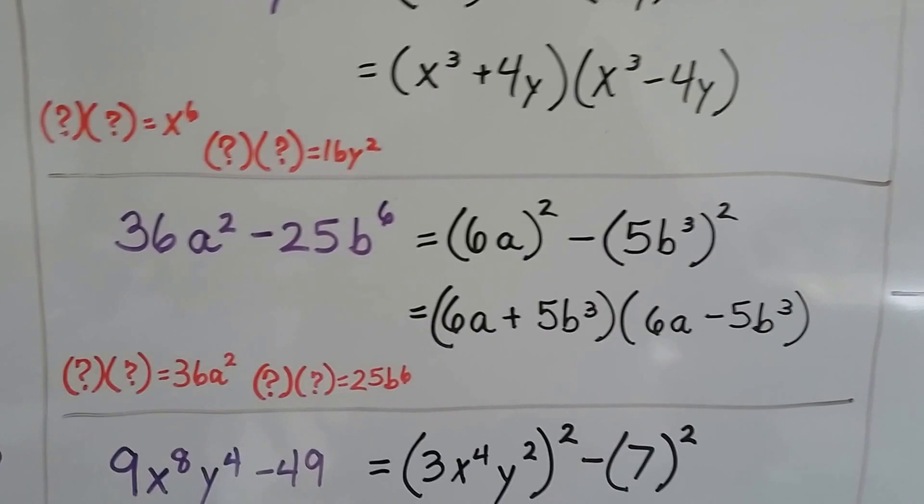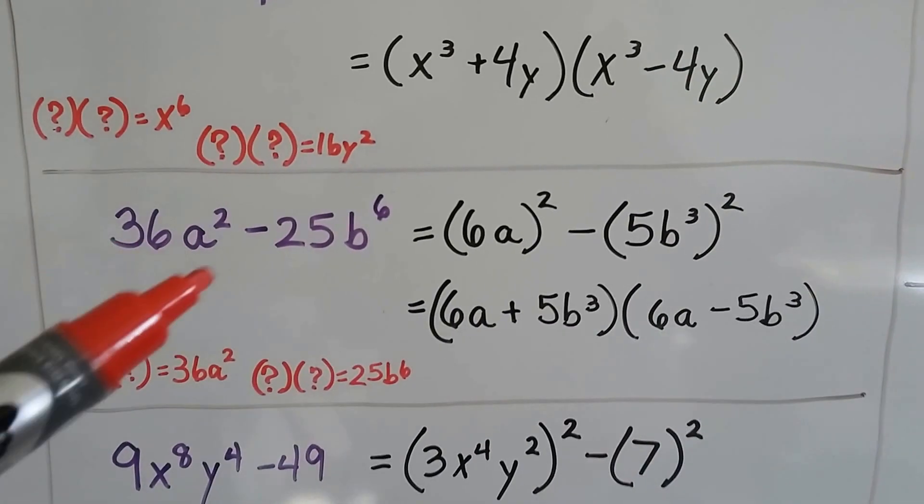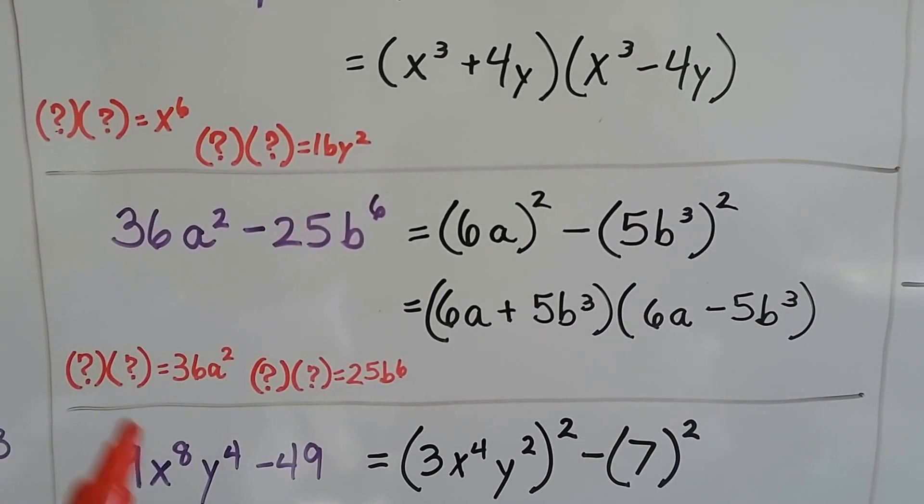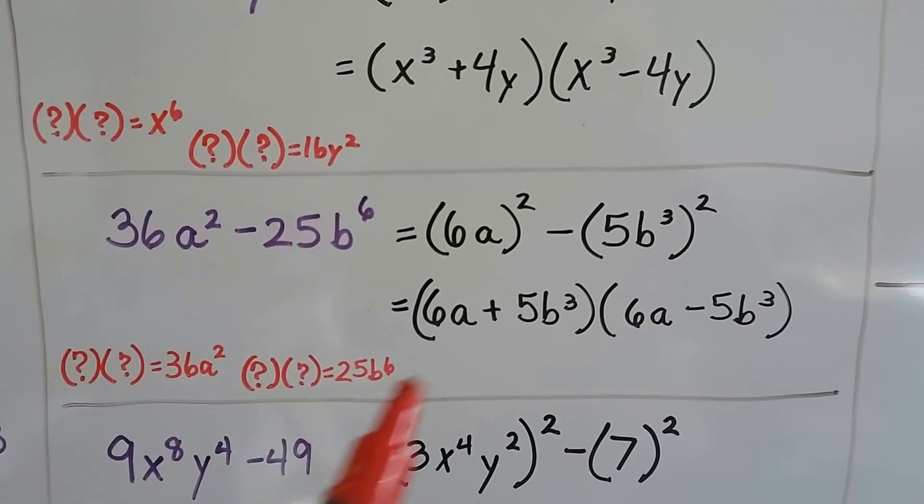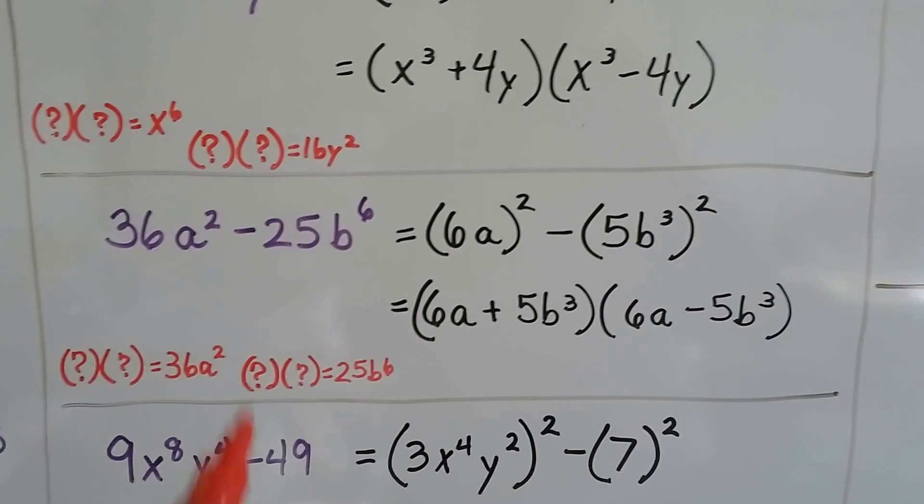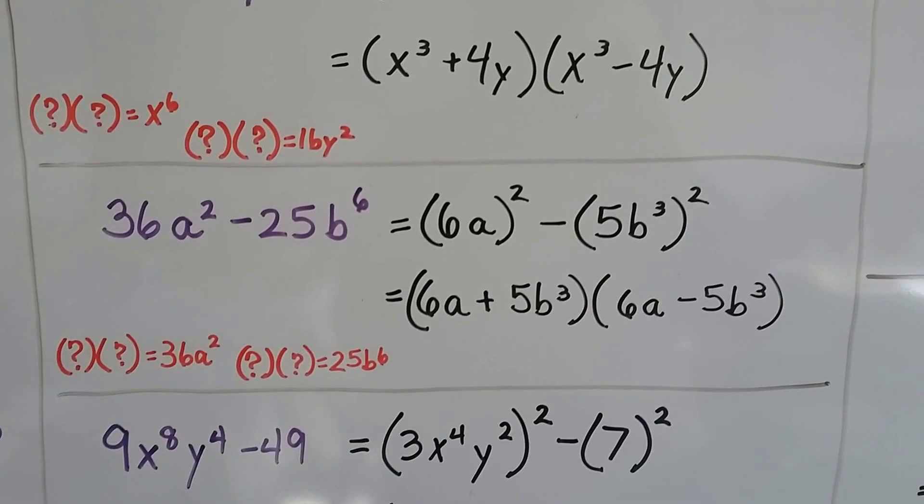Let's try a harder one. Now we've got 36a² minus 25b^6. What times what is 36a²? 6a times 6a.